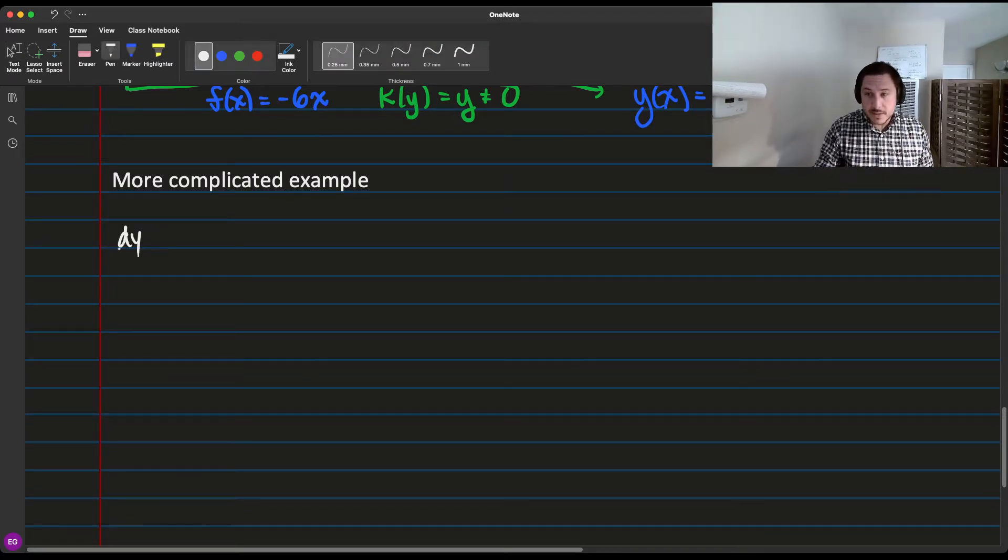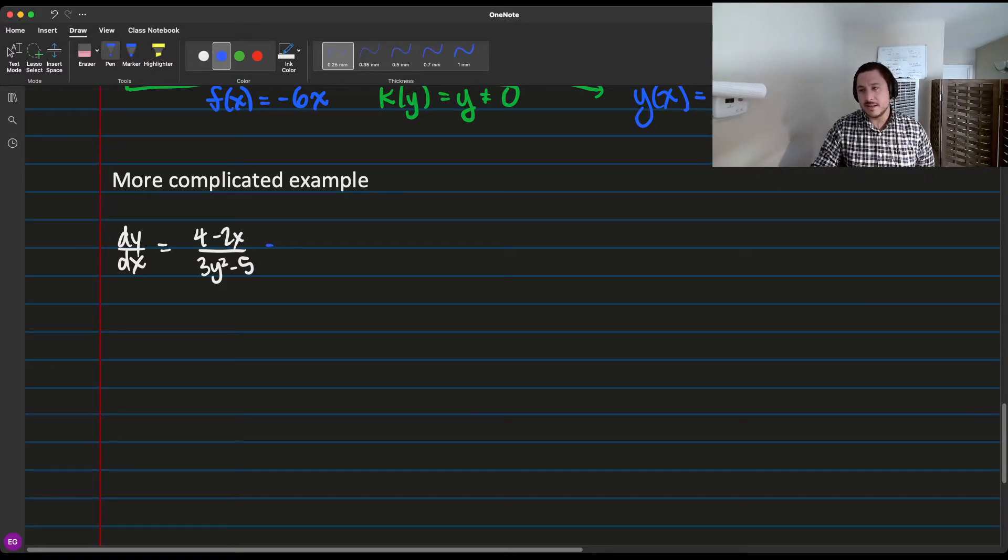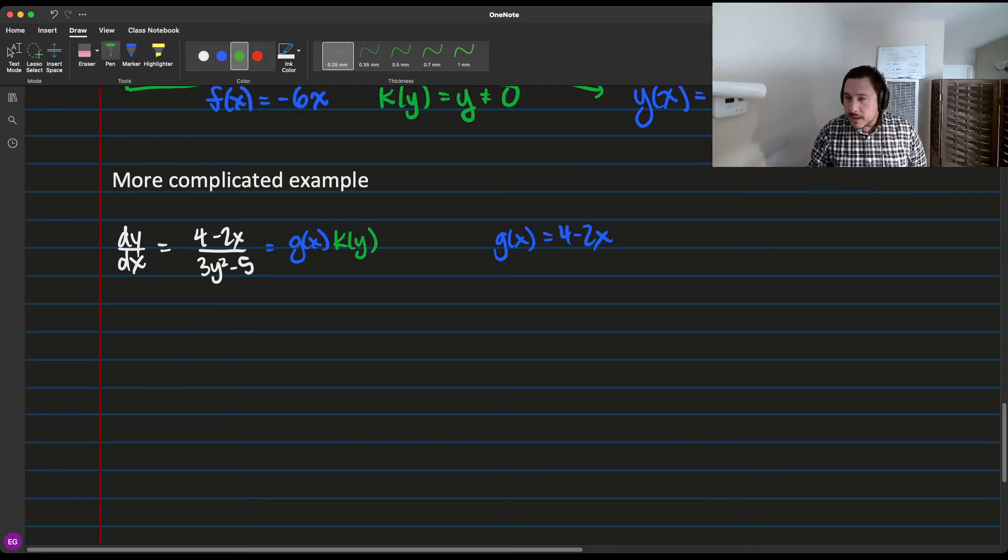So let's say that you have dy dx equals 4 minus 2x over 3y squared minus 5. So remember, the way we like to write this is as g of x times k of y. So our g of x is 4 minus 2x. And our k of y, in this case, is 3y squared minus 5.